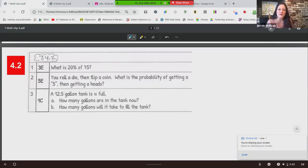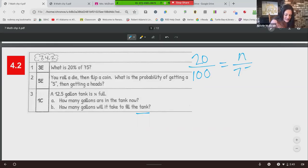Alright, 4.2. Hopefully these are starting to look real familiar and you're just getting them mastered. So first one says, what is 20% of 75? So we're going to set this up like a proportion. So we are going to say 20%, which we know 20% is the same as 20 over 100, is how much of 75?